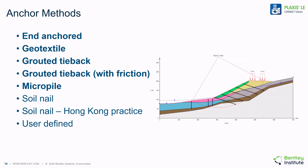Plaxis LE implements a number of methods for modeling internal supports in the software. Support methods implemented include end-anchored supports, geotextiles, grouted tiebacks, micropiles, and several versions of soil nails, as well as a user-defined model. In this video, we will be going over the implementation of anchored supports, geotextiles, grouted tiebacks, and micropiles. The user is encouraged to review the help documentation for further details on the other methods. The figure on the right also shows a slope that has been stabilized both with anchors and with micropiles.